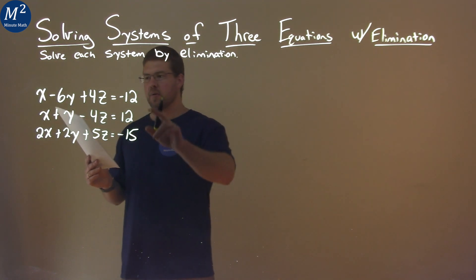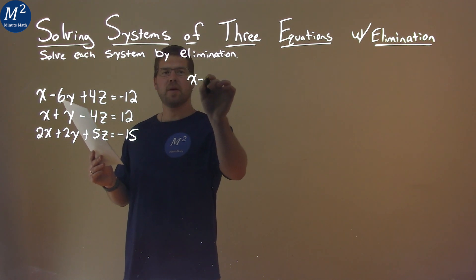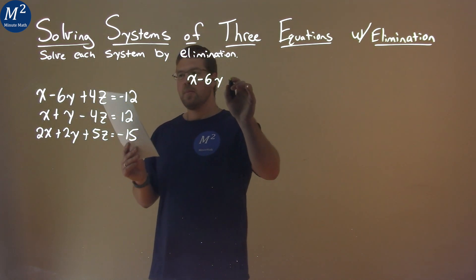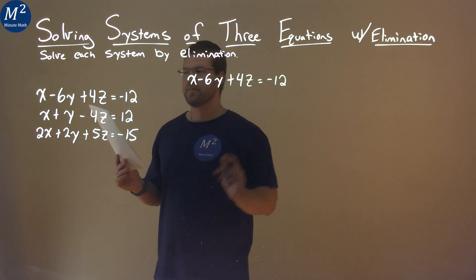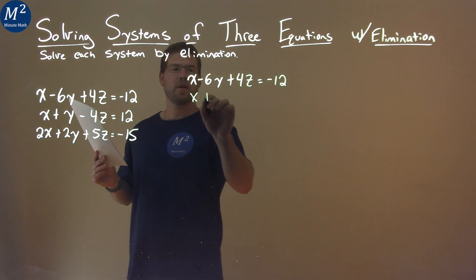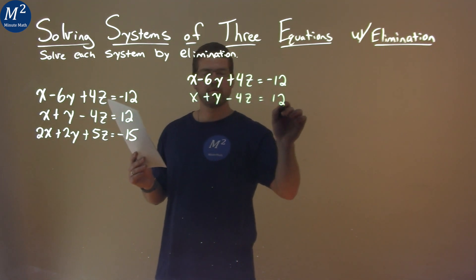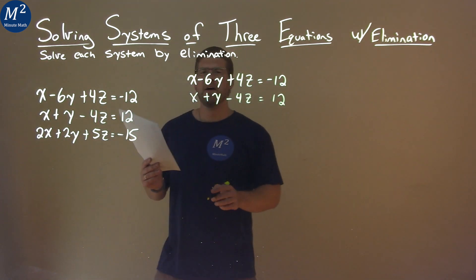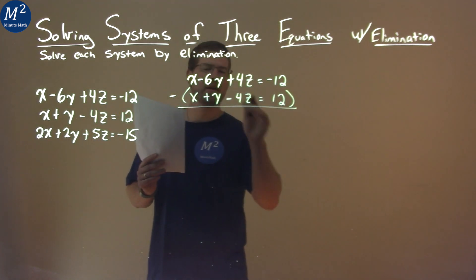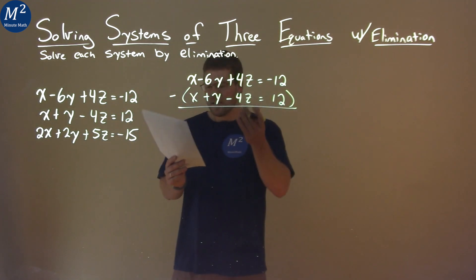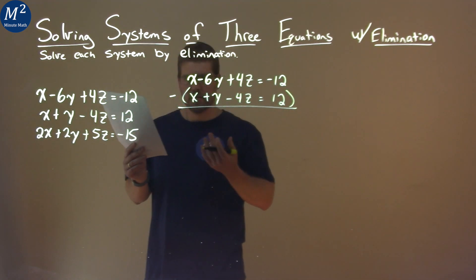Let's look at our first equation and our second equation. If I rewrite them here, we have x minus 6y plus 4z equals negative 12, and then we have x plus y minus 4z equals positive 12. If I subtract the two equations, this whole second equation we're subtracting, we can eliminate the x variable. x minus 1x is just zero. They cancel out.